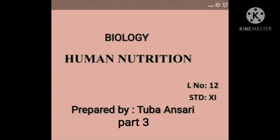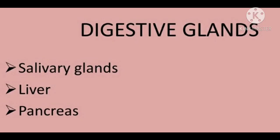Today we are going to start with chapter 14 of biology standard 11th, human nutrition part 3. Our next topic in this chapter is digestive glands. Digestive glands are associated with the alimentary canal, which includes the salivary glands, liver, and pancreas. These glands secrete the digestive juices which help in digestion, which is why they are called digestive glands.